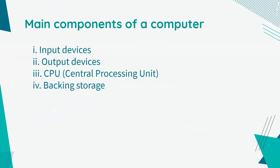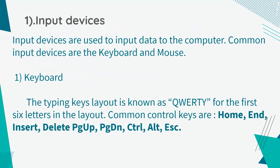Next, I'm going to talk about the main components of a computer. In a computer, there are four main components: input devices, output devices, the central processing unit which is the CPU, and the backing storage. First, let's talk about input devices. Input devices are used to input data to the computer. Common input devices are the keyboard and the mouse.